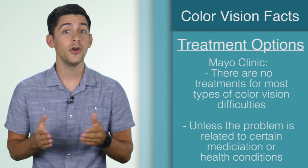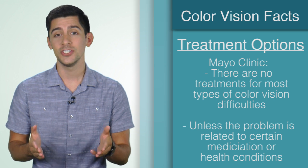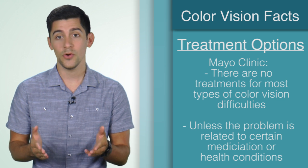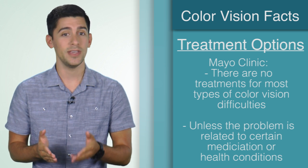According to the Mayo Clinic, there are no treatments for most types of color vision difficulties, unless the color vision problem is related to the use of certain medicines or conditions that can be helped with other therapies.